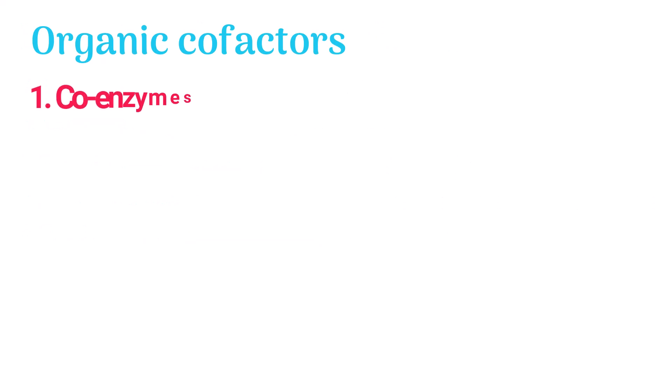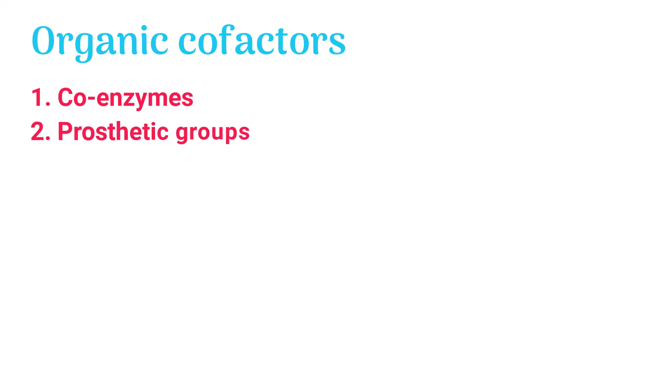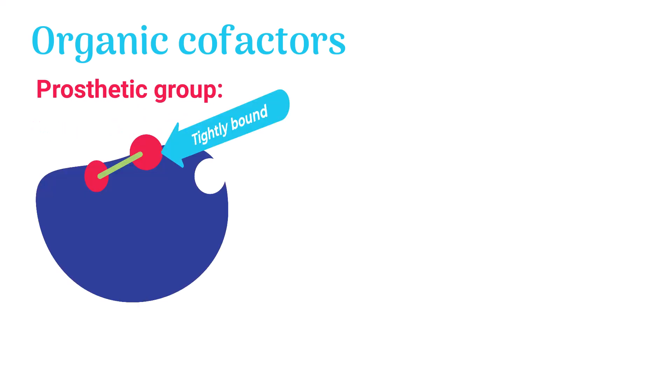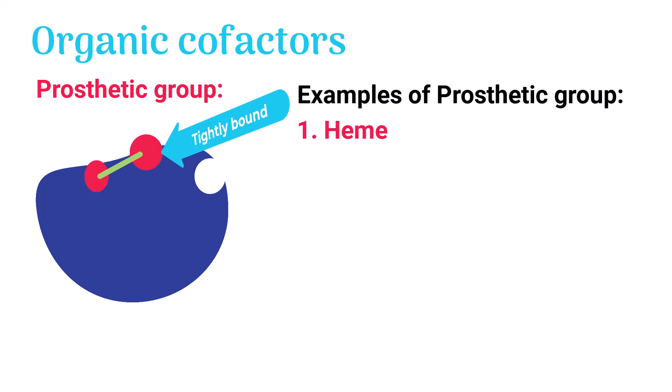Organic cofactors are further divided into two types: coenzymes and prosthetic groups. A cofactor tightly bound to the enzyme is known as the prosthetic group — it is permanently attached to the enzyme. Examples of prosthetic groups are heme, flavins, biotin, etc.